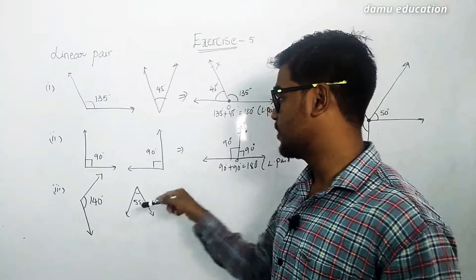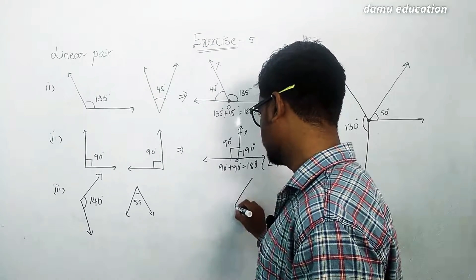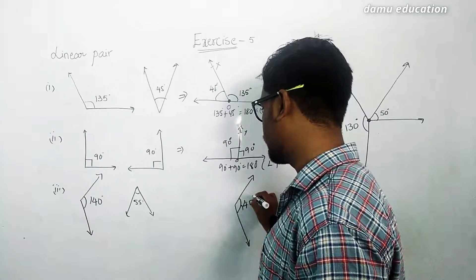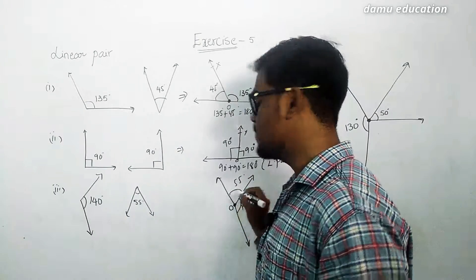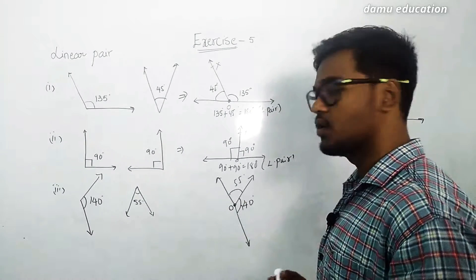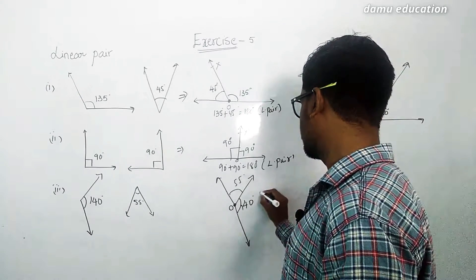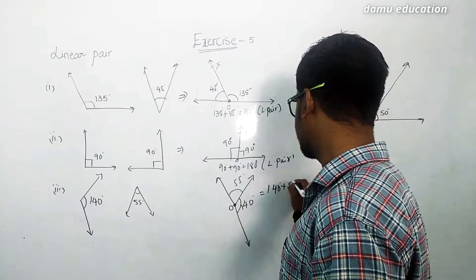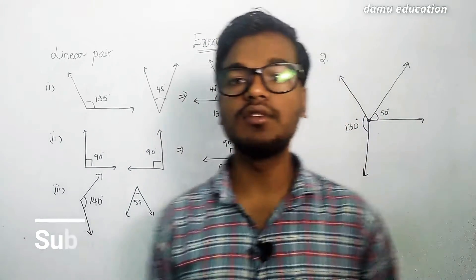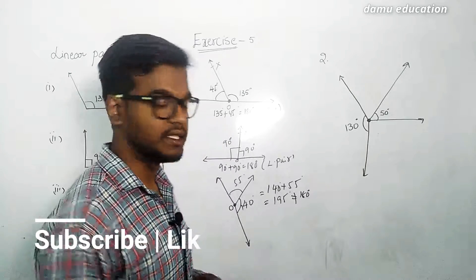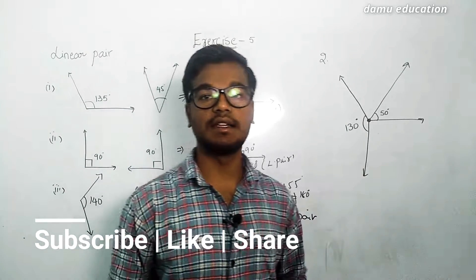Now the third one: they give 140 degrees and 55 degrees. Framing them with the same vertex O — even though they can be framed as adjacent angles, 140 plus 55 equals 195, which is not equal to 180 degrees. So this is not a linear pair.